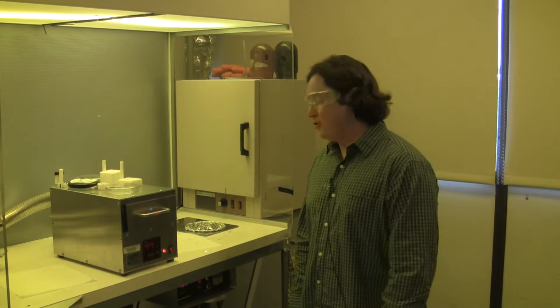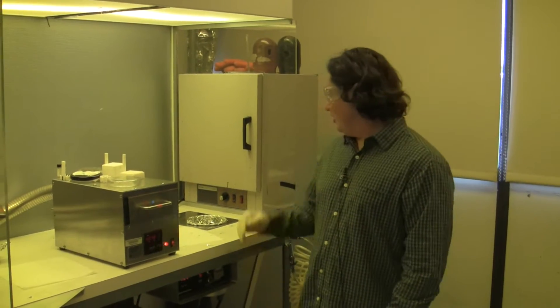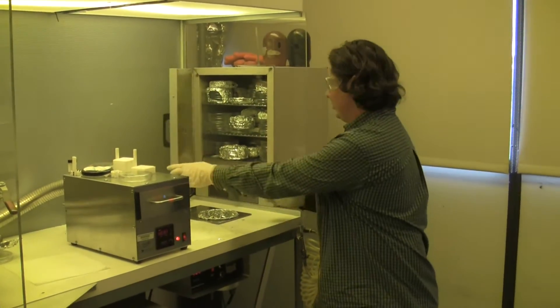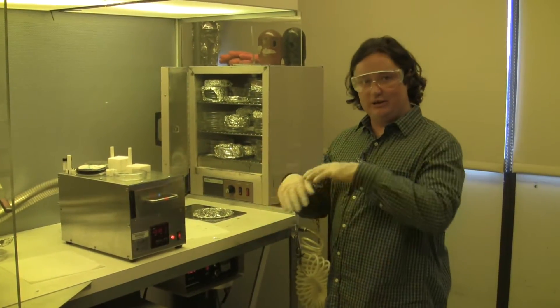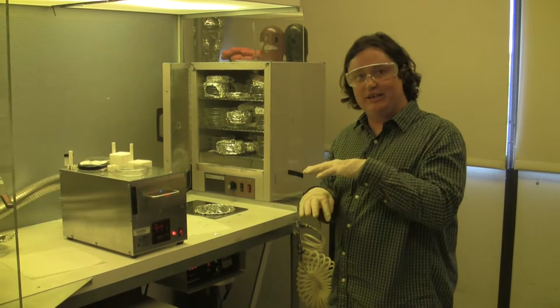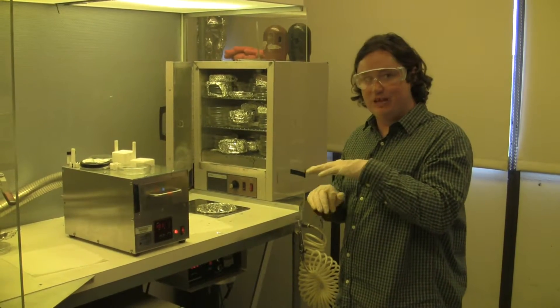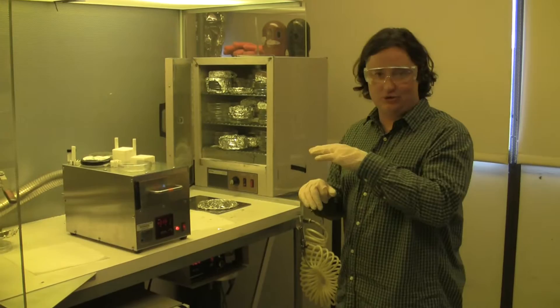This is the laboratory where we make organic solar cells in the Quinn and Bazan groups. We start with a substrate that consists of glass slides with a layer of transparent conducting indium tin oxide on top, which acts as an electrode.